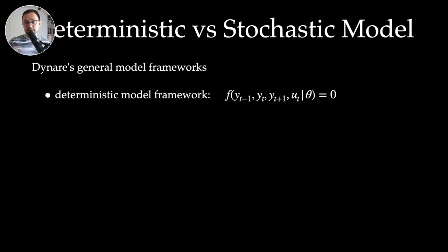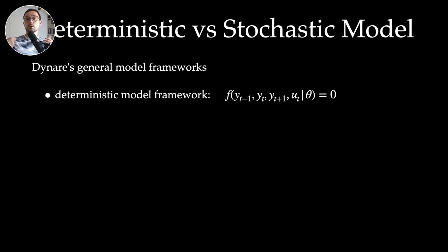Typically we want to compute trajectories or paths for the variables given the model equations — how does the model go from one equilibrium to another? How do agents optimally react to temporary or permanent shocks, or to unexpected or pre-announced shocks? Note that there is no uncertainty here. In the deterministic model, agents have perfect foresight: they know the exact values of all the shocks.